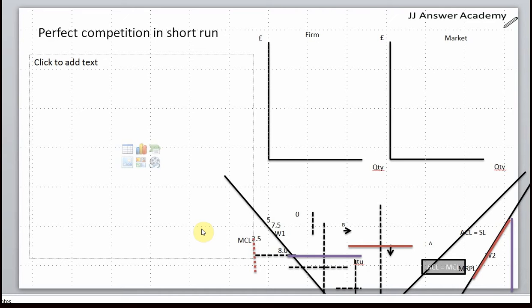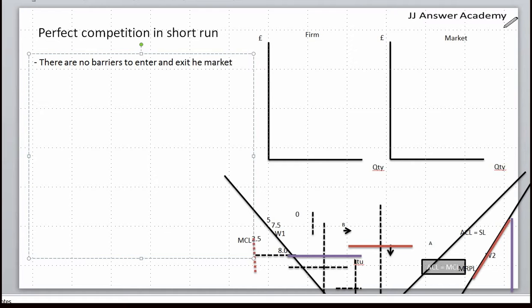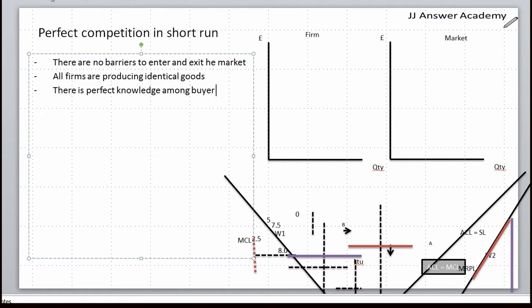We are looking at perfect competition in the short run. There are no barriers to enter and exit the market, all firms are producing identical goods, and there is perfect knowledge among buyers and sellers, which is important to understand.